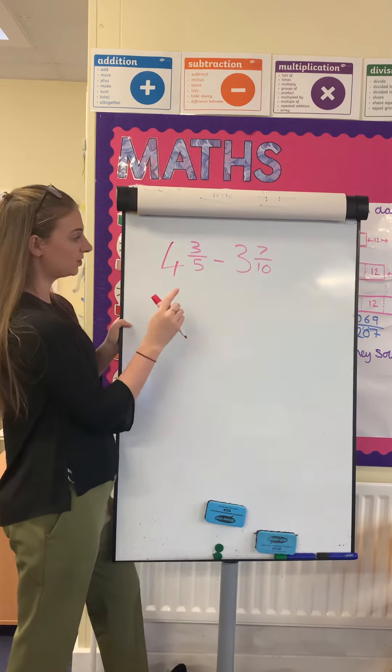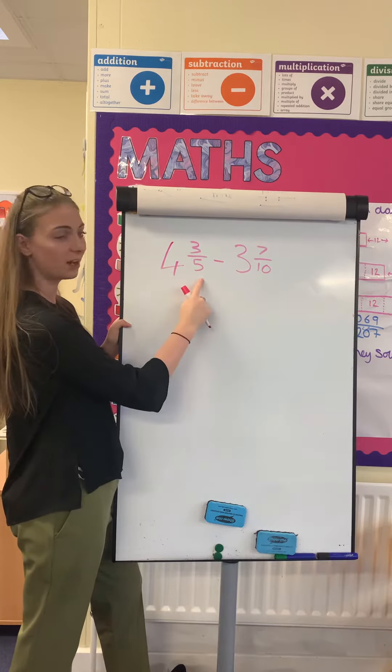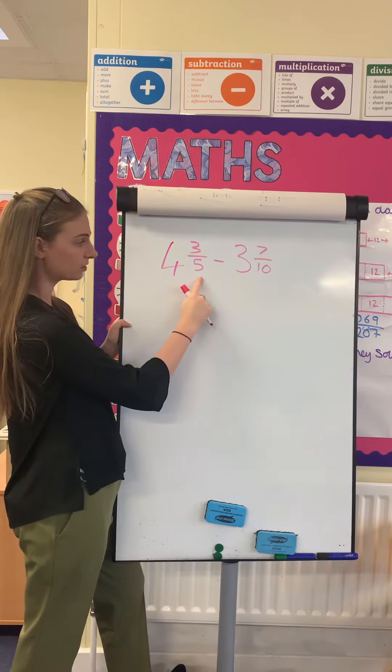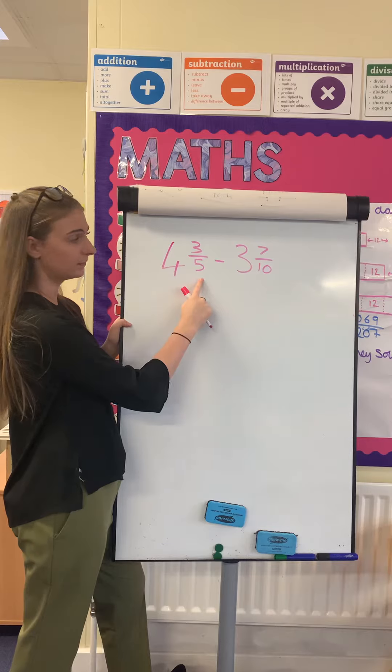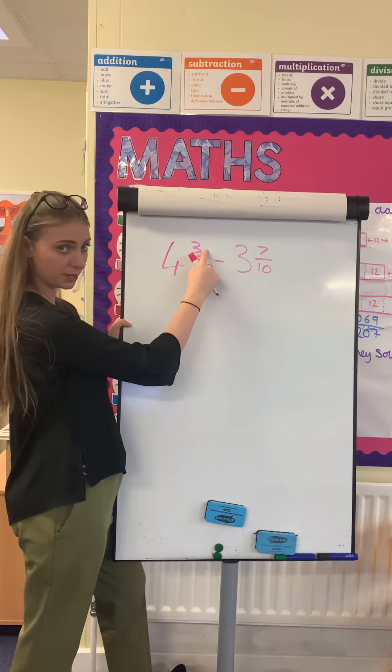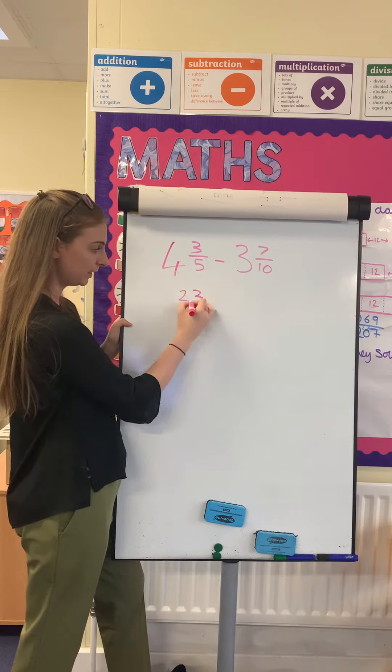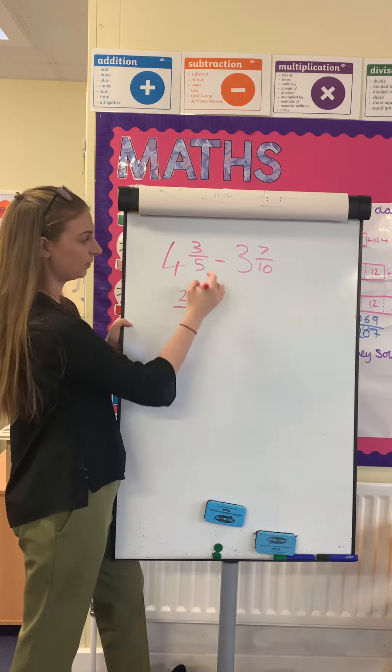To do that, I do my whole number times my denominator — so 4 times 5, which is 20 — add 3, which is 23, and it's always over the same denominator, so over 5. So the whole number times the denominator, then add the numerator and put it over the same denominator.